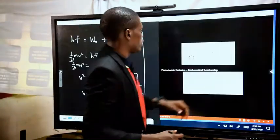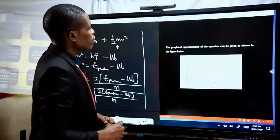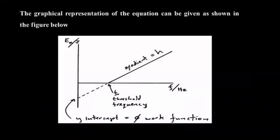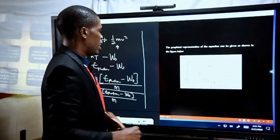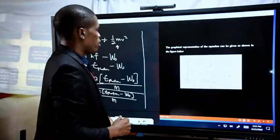We can also consider other aspects of the photoelectric effect. When we consider the graphical representation of the equation, we see that the photon energy is dependent on frequency with a direct relationship. The gradient of the curve is the Planck's constant H, which is equal to 6.63 × 10⁻³⁴ joule-seconds. At the point of intersection, that is the threshold frequency.